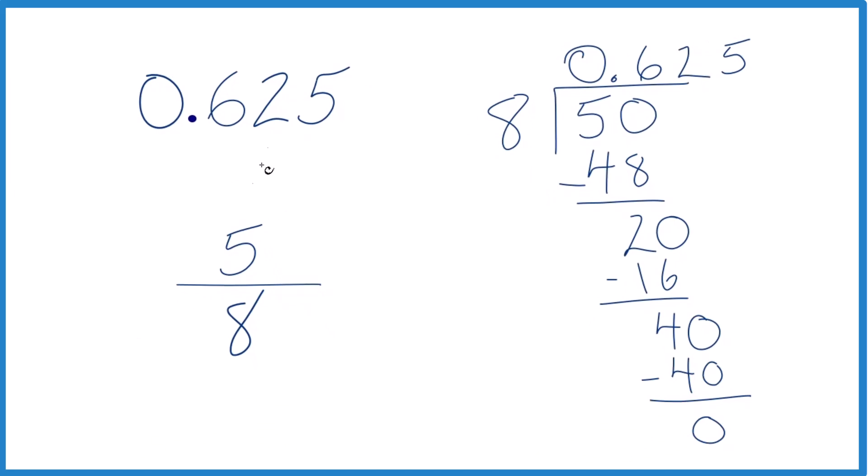So 5 eighths is equal to 0.625. When you divide 5 by 8, you get 0.625. So the fraction 5 eighths, that's equal to the decimal 0.625.